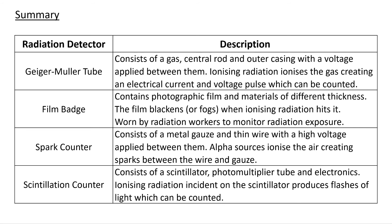To summarize our four types of radiation detectors: the Geiger-Müller tube and film badge are the two most important for the exam. The Geiger-Müller tube consists of a gas, central rod and outer casing with a voltage applied — ionizing radiation ionizes the gas, creating a current and voltage pulse which is counted. The film badge contains photographic film and materials of different thickness — the film blackens when radiation hits it, and it is worn by radiation workers. The spark counter uses a metal gauze and wire with high voltage — alpha sources ionize the air, creating sparks. The scintillation counter uses a scintillator and photomultiplier tube to detect flashes of light from ionizing radiation.